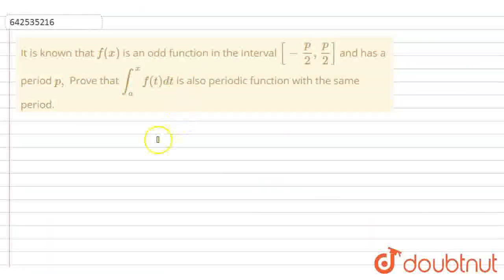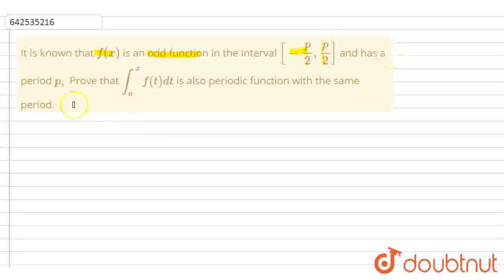Hello students, today's question is: it is known that f of x is an odd function defined in the interval of minus p by 2, comma p by 2, and has a period p. Prove that the integral from a to x of f of t dt is also a periodic function with the same period.